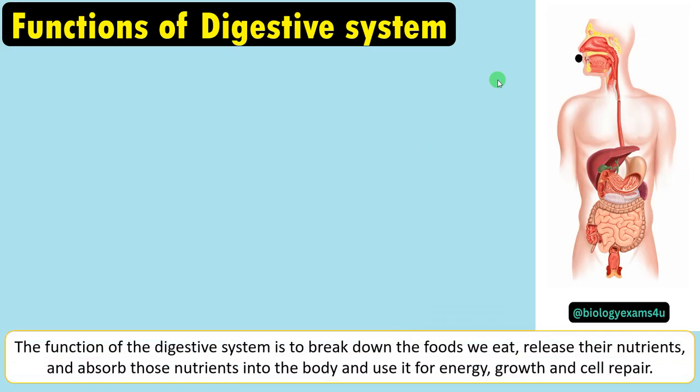What do you mean by digestion? Digestion is simply the breaking down of food we eat, releasing the nutrients — carbohydrates and proteins are broken down into simple molecules or absorbable forms — and that is absorbed into the body and used for energy, growth and cell repair.